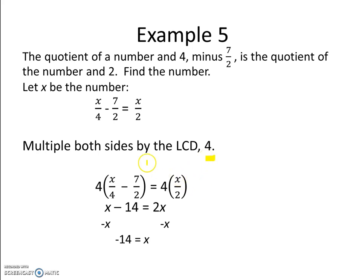Multiplying both sides of the equation by 4, 4 times x divided by 4 gives us x. 4 times negative 7 halves is negative 14. And 4 times x divided by 2 is simply 2x. Subtracting x from both sides, we end up with x being negative 14.